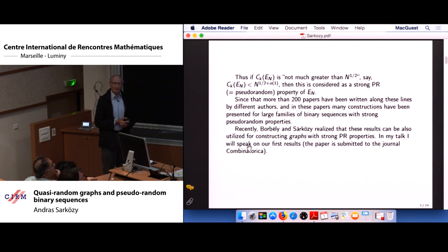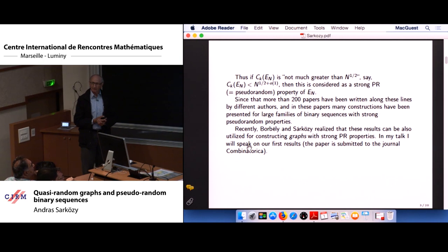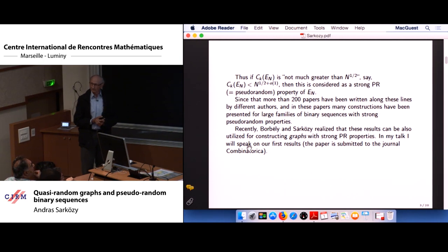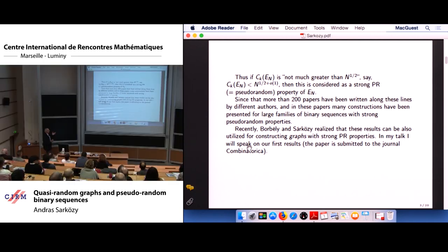In most of the cases, finite fields are used, and Weil's theorem plays an important role in the majority of proofs. But there are also other tools used, too. Recently Borbély and I realized that these results on pseudo-random binary sequences can be also utilized for giving explicit constructions for graphs with strong pseudo-random properties. In my talk I will speak on our first results, which will be submitted one day to the Journal of Combinatorica.